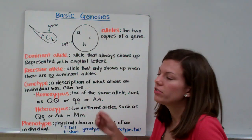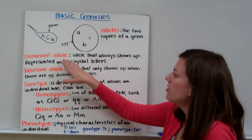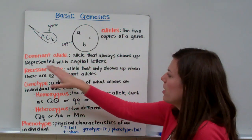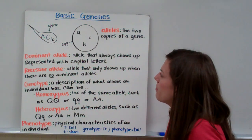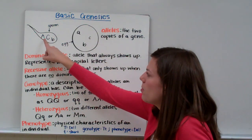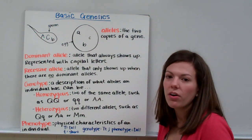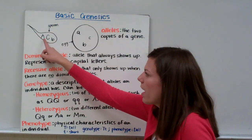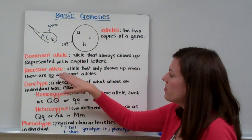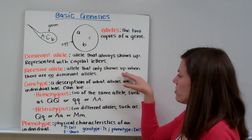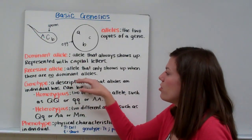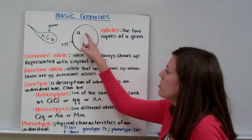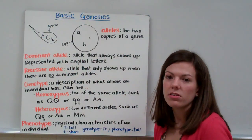Now there are two types of alleles. A dominant allele is an allele that always shows up. It's represented with capital letters. For example, this big A would be a dominant allele — if you have a dominant allele, that trait will show up. A recessive allele is an allele that only shows up when there are no dominant alleles. Little letters represent recessive alleles.